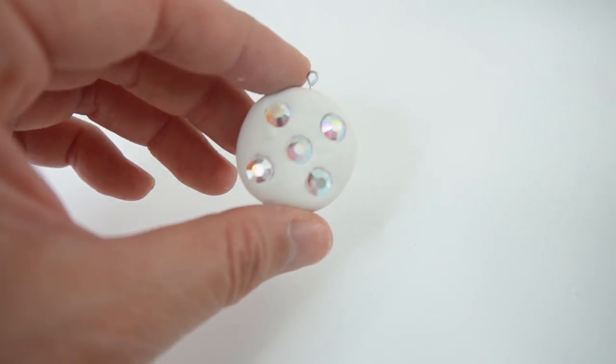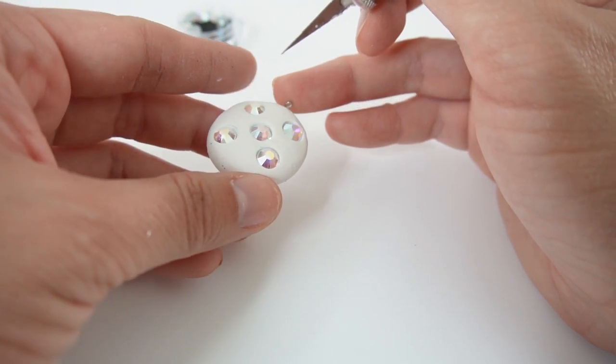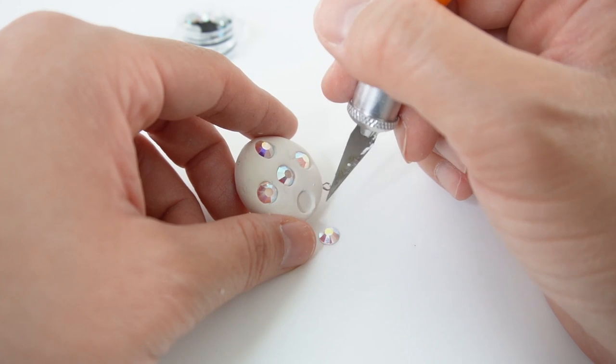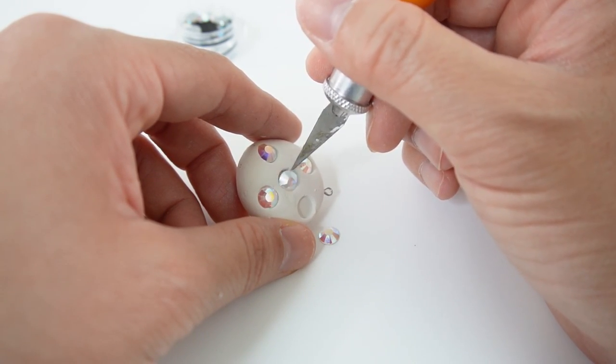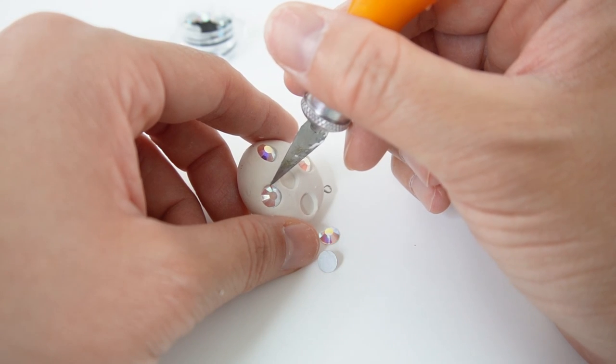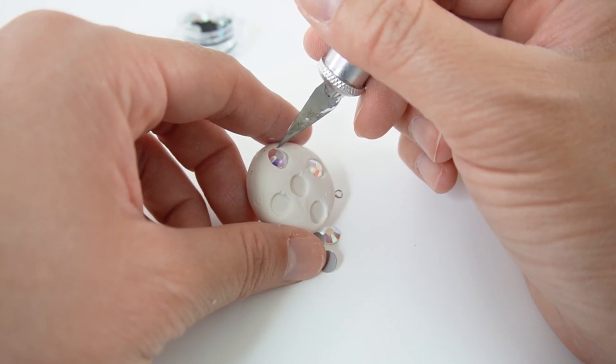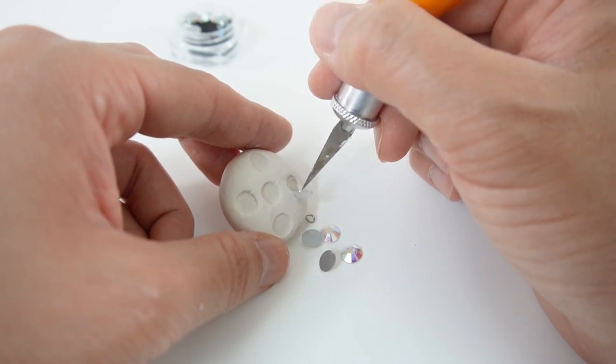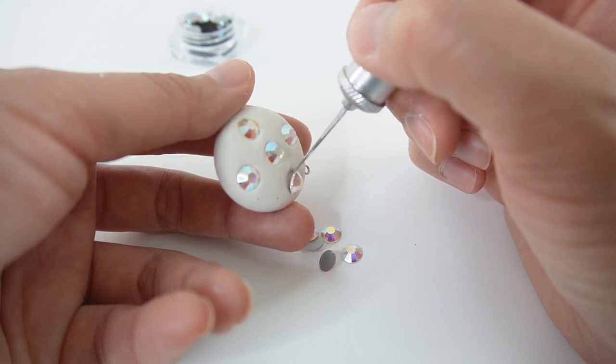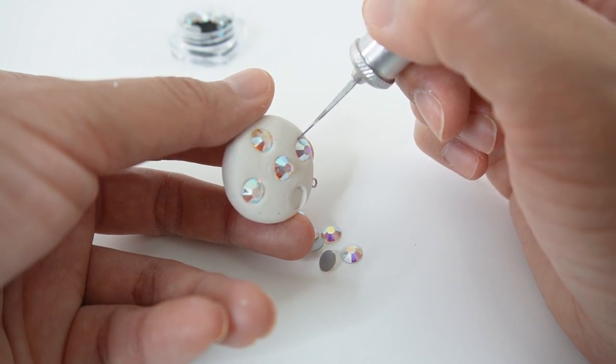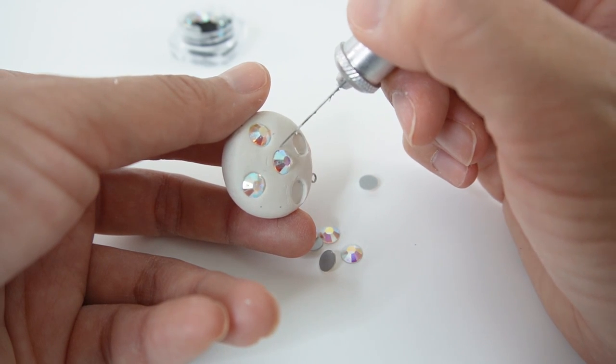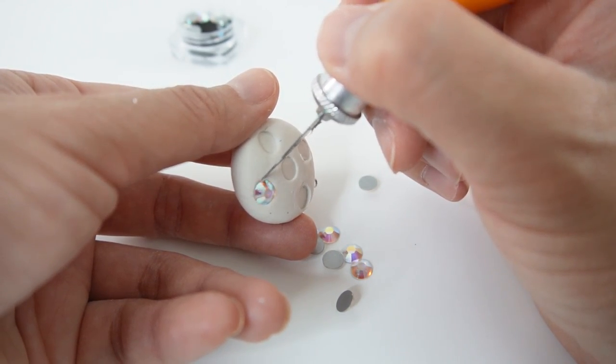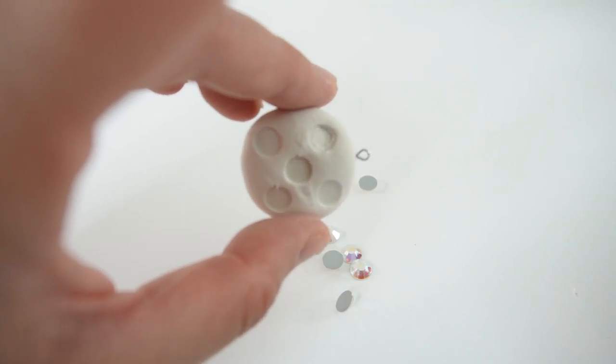But since we're going to bake it in high heat, what I'm going to do is remove the gems and then put them back in later. So with my X-Acto knife, I'm going to carefully pop out the gems. This way it won't melt in the oven. Be super careful not to change the shape of it. Okay, so now we're ready to bake.